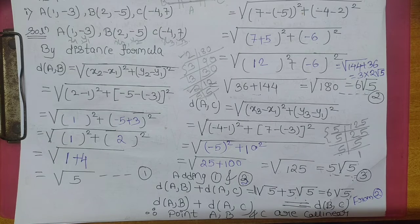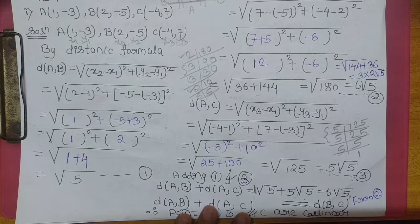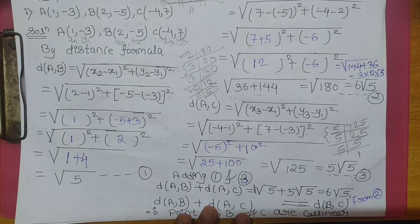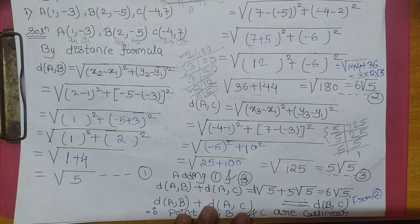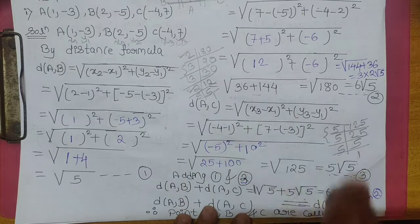Toh collinear ka basic concept kya hai? Sabse pahle aap ismein three distances find karenge: AB, BC, AC. Then AB plus AC check karna. Agar woh BC hai, toh collinear hai. Nahi hai toh collinear nahi hai.